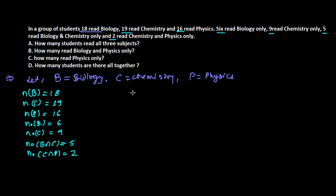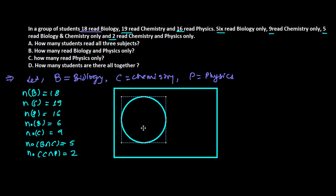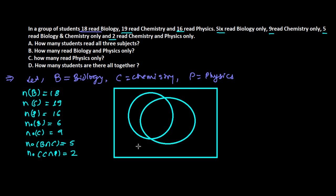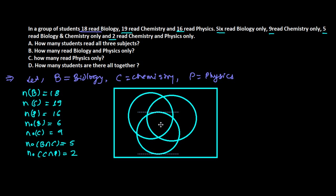There are three subjects, so let me draw a slightly larger Venn diagram. This circle represents physics, this one represents chemistry, and this one represents biology.